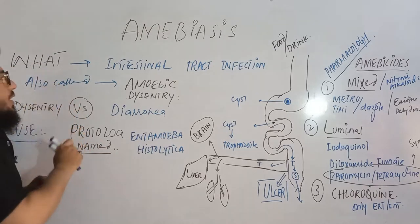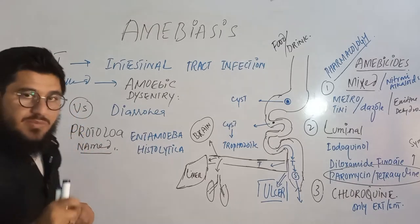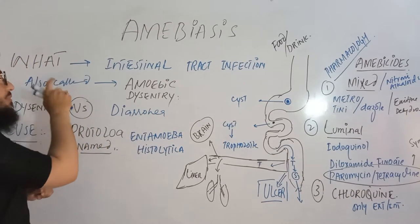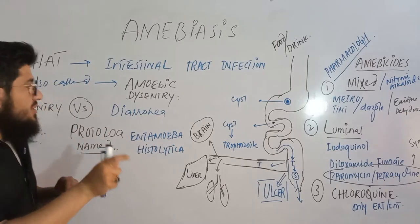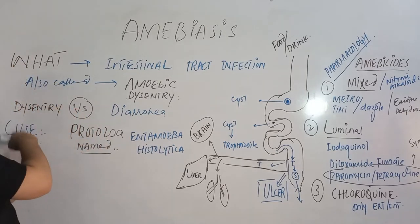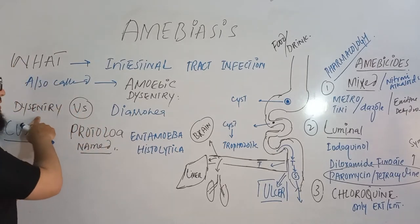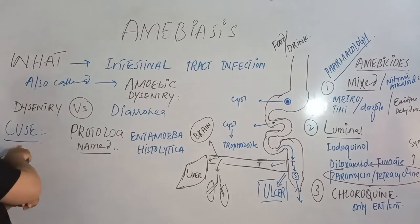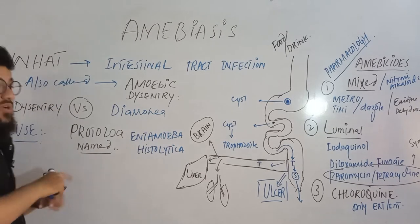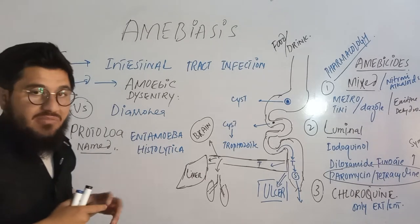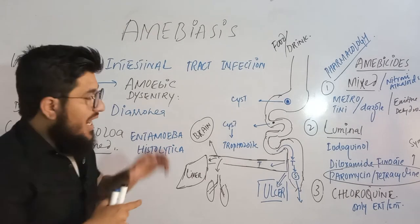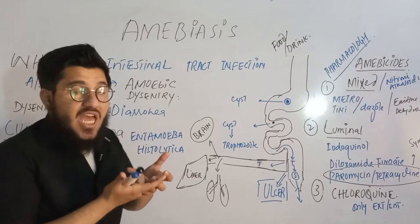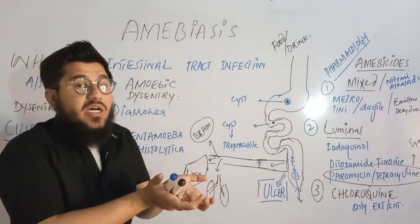The very first point will be: what is MEBS? The second point will be: what is the alternative name of MEBS? The third point will be the difference between dysentery and diarrhea. The fourth point will be the cause — what is the main cause of MEBS? And the fifth point will be discussing how this MEBS is caused.